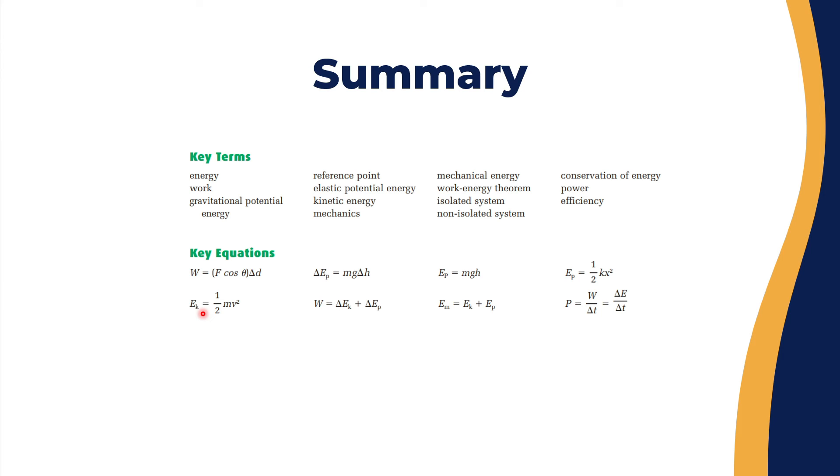We have E kinetic—don't confuse between the two. E kinetic would equal one over two mass times v squared. And we have the work-energy conservation: W equals delta E kinetic plus delta E potential. E mechanical equals E kinetic plus E potential.